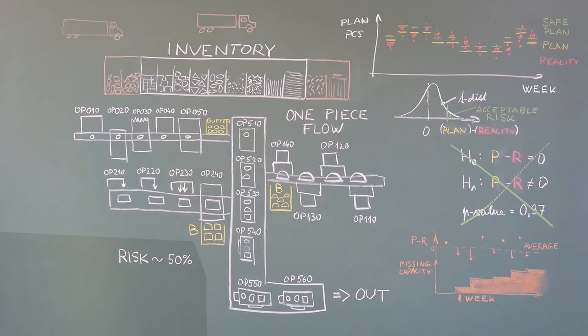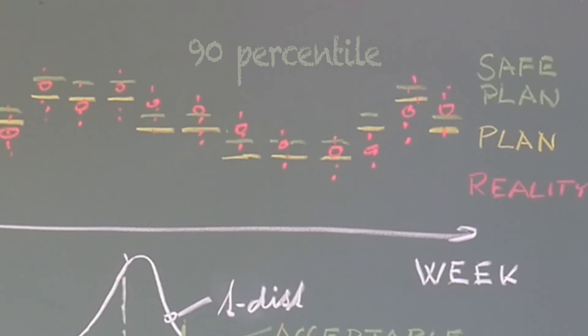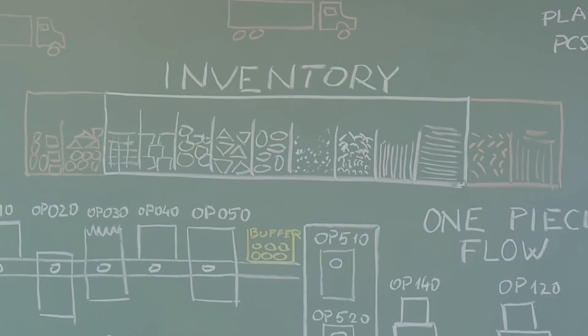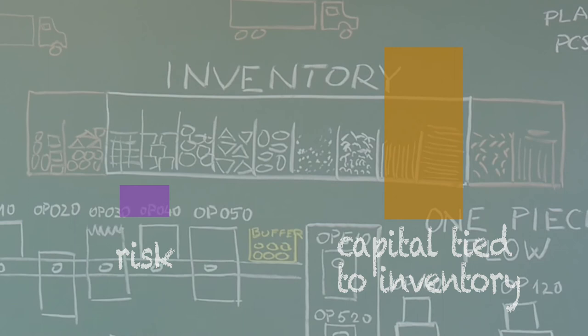If we are ready to accept, let's say 10% risk, we need to look at the 90th percentile for the correct inventory level over the time. The low levels of risk do not come for free. The lower risk we are willing to accept, the higher will be the capital tied to the inventory. And it will never be a risk-free enterprise anyway.